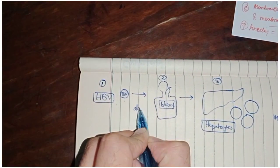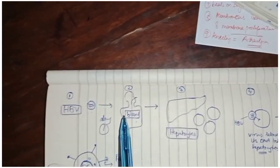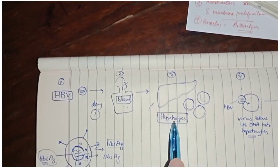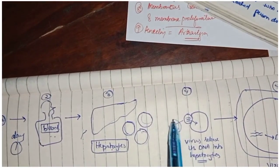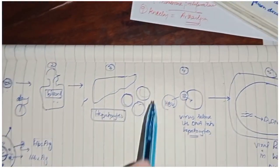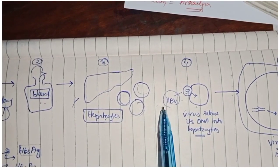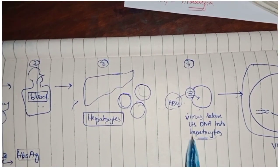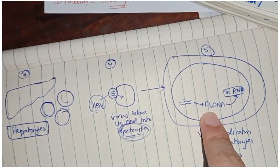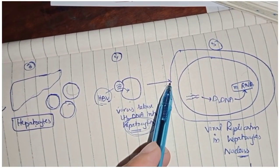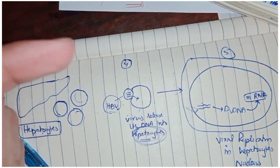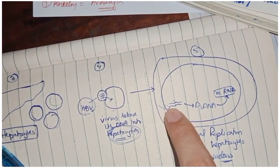On day one, the virus enters into your blood. As the blood circulates, it comes into the liver. Let's suppose this is the liver and these are the hepatocytes inside the liver. The hepatitis B virus attaches with the hepatocytes with the help of hepatitis B surface antigen. This surface antigen helps the virus attach with the hepatocytes. Once attached, it releases its DNA into the hepatocytes. This DNA then comes into the nucleus of the hepatocytes — just the virus's DNA has been released inside.